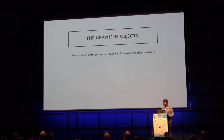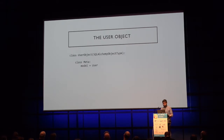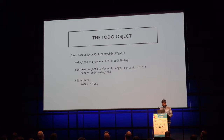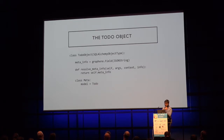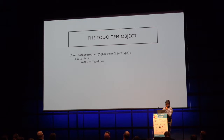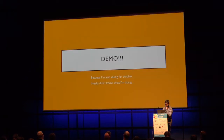These are the Graphene objects. For User, you just say the model is User — lots of black magic happening there. For the Todo object, if you have special types, you need to use graphene.Field with JSONString because we're using a JSON type. The TodoItem object has nothing special. Now let's head over to the demo.